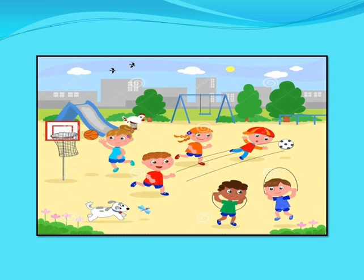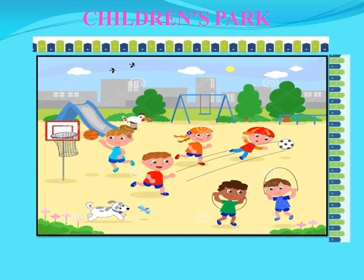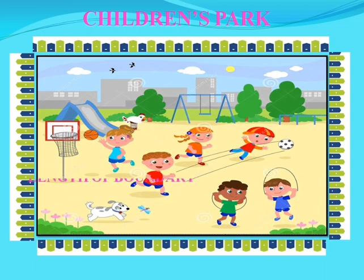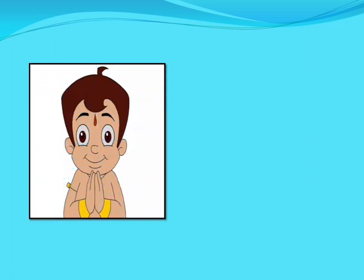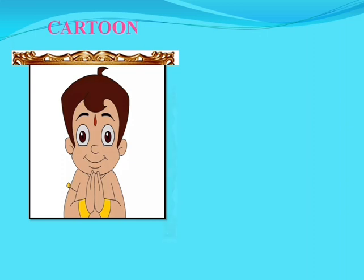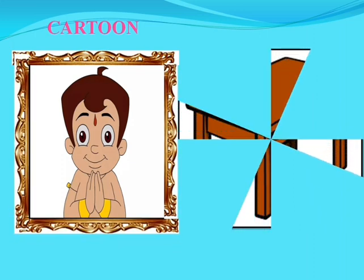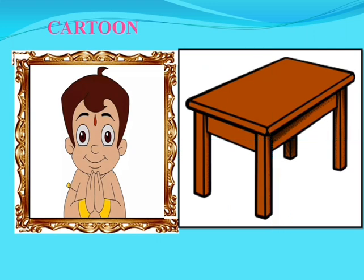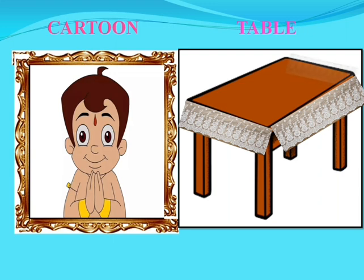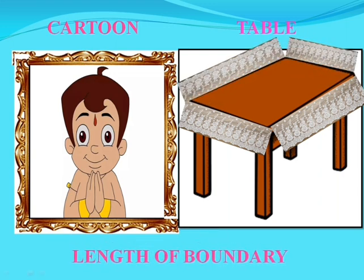What is this, children? Yes, this is a children's park. Now if we want to fence this park, what is to be found out? Yes — length of boundary. Let's take another example. This is a picture of a cartoon. We want to frame this picture. And here is another example: a table, and if we want to fix a lace on the table cover, then what is to be found out? Length of boundary. So children, length of boundary is also called perimeter.